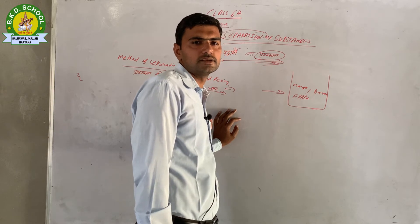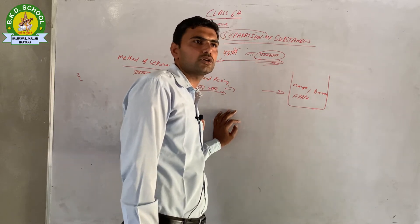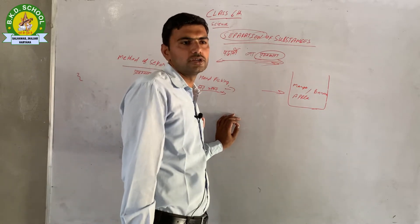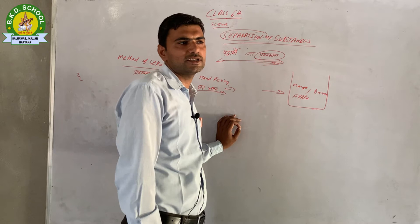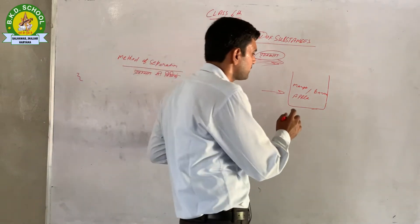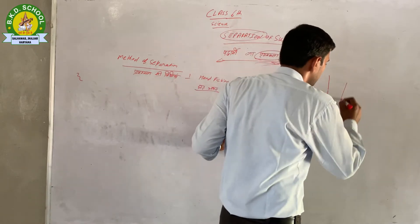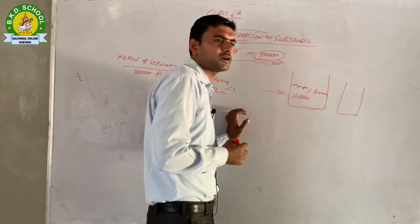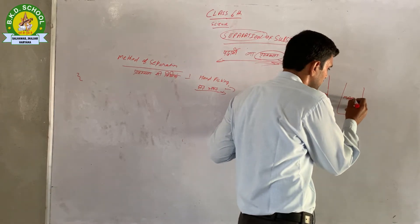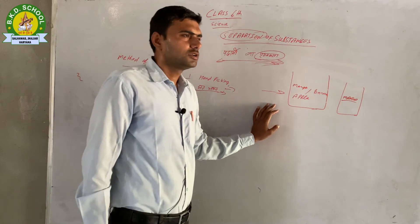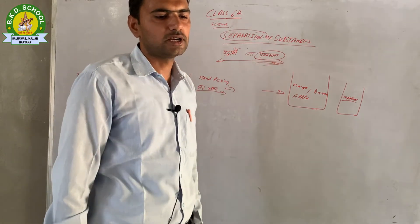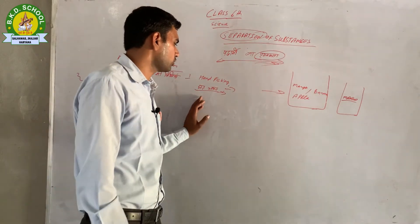Impurities are large in size and easily visible। जैसे उस बर्तन के उदाहरण में — मान लीजिए हमें मैंगो अलग करना है, तो हम हाथों की सहायता से उसमें से मैंगो दूसरे बर्तन में रख सकते हैं, क्योंकि मैंगो का साइज़ बड़ा है और आसानी से पहचाना जा सकता है। घर पर भी हम हस्त चयन विधि का प्रयोग करते हैं — जैसे दाल में से कंकर-पत्थर अलग करना।